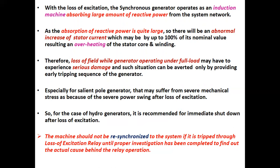Specially for salient pole generators, which may suffer from severe mechanical stress because of severe power swings after loss of excitation, for the case of hydro generators it is recommended for immediate shutdown after loss of excitation. The machine should not be resynchronized to the system if it is tripped through the loss of excitation relay, until a proper investigation has been completed to find out the actual cause behind the relay operation.